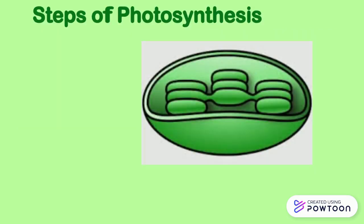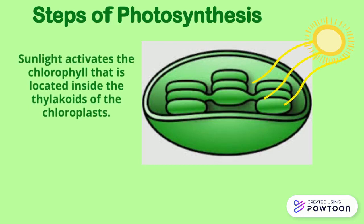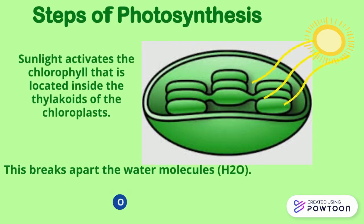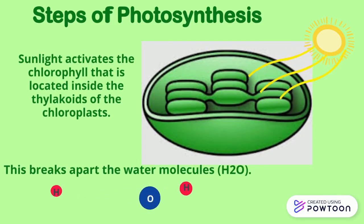The first step of photosynthesis is when the sunlight activates the chlorophyll that is located inside the thylakoids of the chloroplast. This becomes excited and it breaks apart the water molecules, releasing oxygen and hydrogen ions.